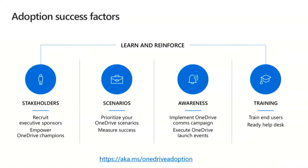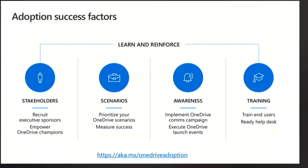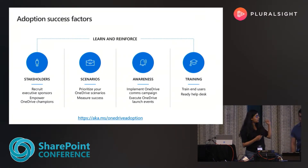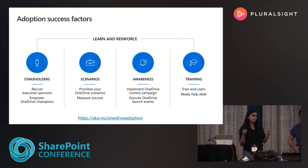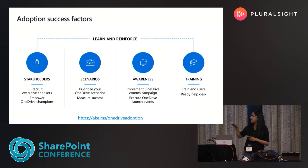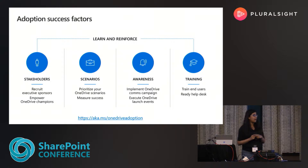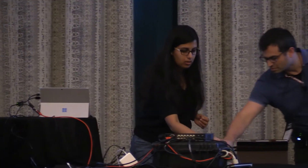Based on what didn't work with our clients, we have recognized these four success factors that can help you drive a successful adoption: identifying stakeholders and scenarios, driving awareness, and delivering training. A lot of content has been produced by us to help you support all these success factors, and they are available at aka.ms/OneDriveadoption. I'll hand it over to Matt now, who will take you through these scenarios and the content we've produced.